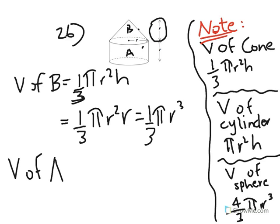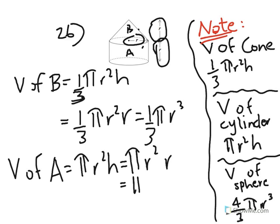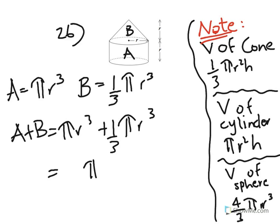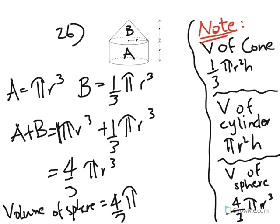The volume of cylinder A is pi r squared h. The radius is R and the height is R, so it becomes pi R cubed. The total volume A plus B is pi R cubed plus one third pi R cubed, which equals four thirds pi R cubed. The volume of a sphere with radius R is also four thirds pi R cubed, so the two are equal and we've proved it.